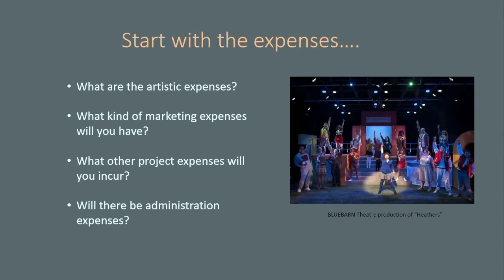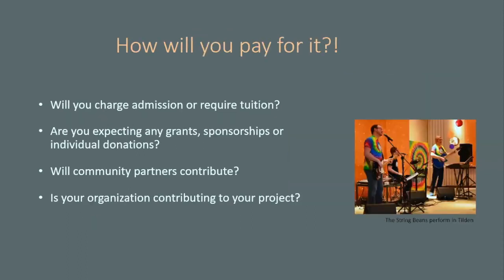Now that you've got a handle on the expenses, it's time to move on to the income — how are you going to pay for it? Will you charge admission or require tuition? Admissions are pretty self-explanatory. On the budget template, there is a category for contracted expenses — things like workshops you might be charging for. That's a little different from the admissions category — those are contracted services your organization is providing, typically in association with your project.